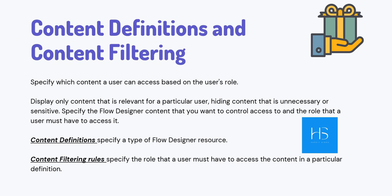Content Filtering specifies the role a user must have to access that particular content. So in step one you define what content to hide, and in step two you define which user roles can access it — other users will be denied, even if they are admins. I'll cover a full demo of Content Definitions and Content Filtering in a separate video. It's available from the start of the Washington release, so if your instance is on Washington, go ahead and start exploring.